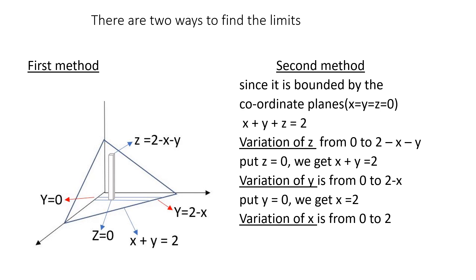The variation of z is the height from z = 0 to the plane z = 2 − x − y. The variation of y comes from the projection of the tetrahedron onto the xy-plane, giving y from 0 to 2 − x, and x varies from 0 to 2. The second method: since the solid is bounded by the coordinate planes, the lower limits are all 0. In x + y + z = 2, z varies from 0 to 2 − x − y; setting z = 0 gives x + y = 2, so y varies from 0 to 2 − x, and x varies from 0 to 2.